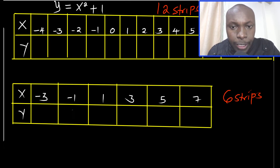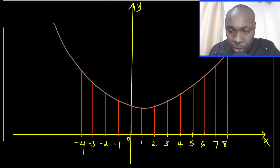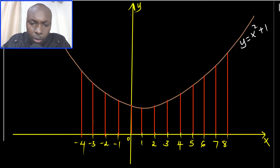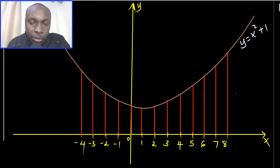To understand this better, I went ahead and sketched the curve y = x² + 1 — it's not a requirement in this three-mark question, but I did it to explain. The curve runs from x = -4 all the way to x = 8. When you count the strips from -4 to 8, you realize there are 12 strips: 1, 2, 3, 4, 5, 6, 7, 8, 9, 10, 11, 12 — but you require only six strips.